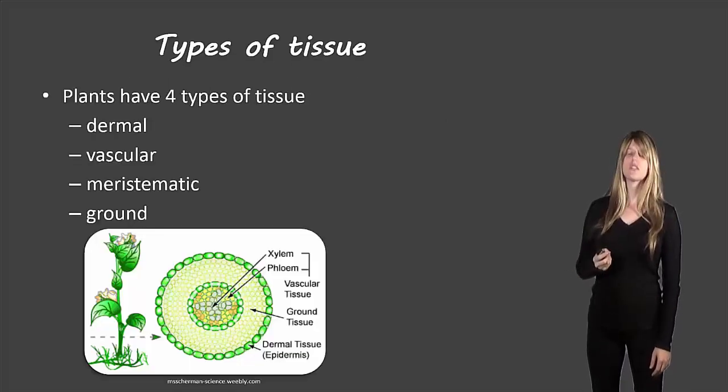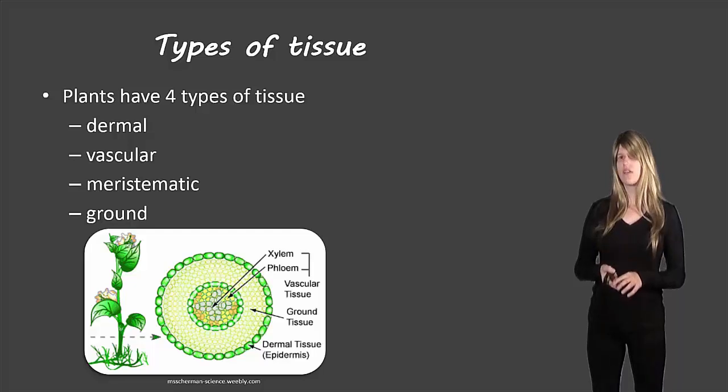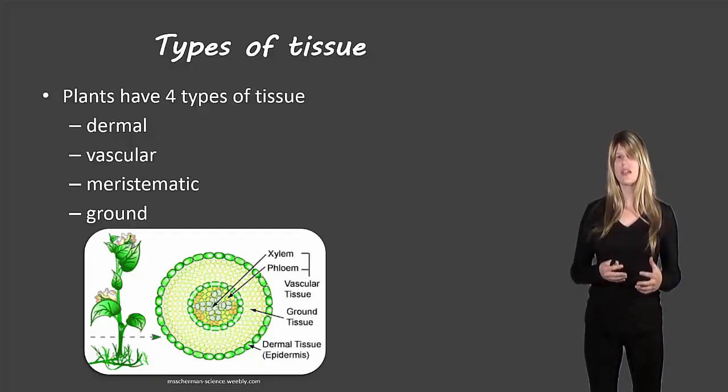So let's look at those four types of tissues: there's dermal tissue, vascular tissue, meristematic tissue, and ground tissue. Those are the four we're going to look at.